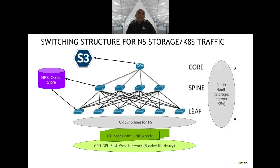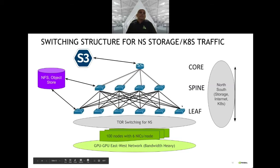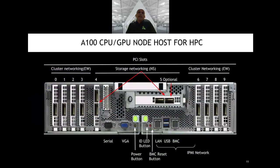The core-spine-leaf model is used for north-south switching, with 100 nodes in the racks. With six NICs — four used for east-west and two for north-south — GPU-to-GPU traffic is significant and requires a high-performing, low-latency network. The back of the node shows four links on each side. In the DGX1 there will be four links, and in the A100 there will be eight links. Storage network traffic moves north-south through those links, and the traditional IPMI network is also present.